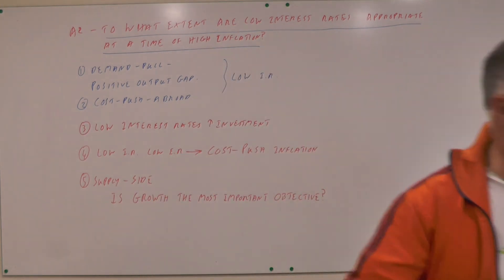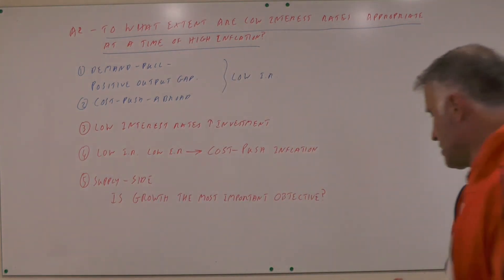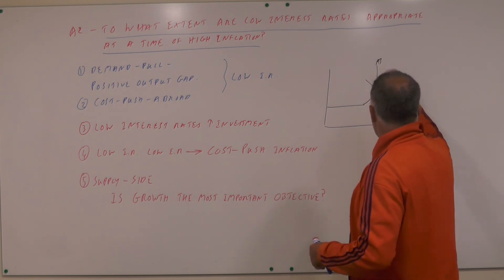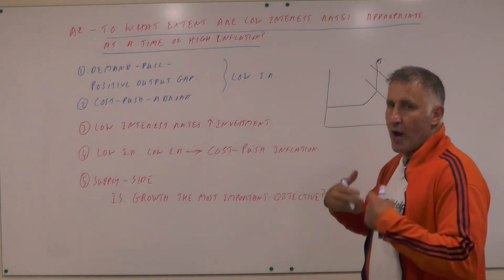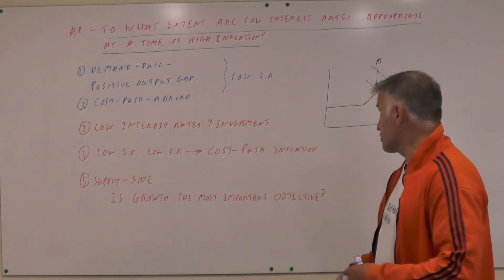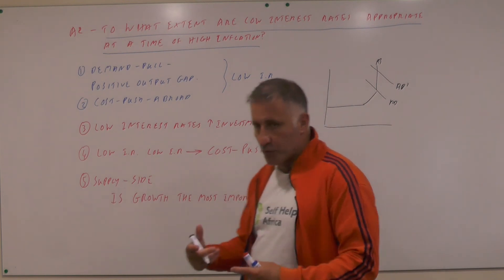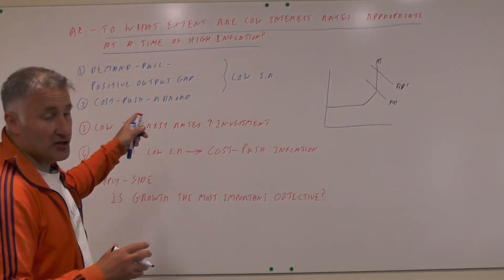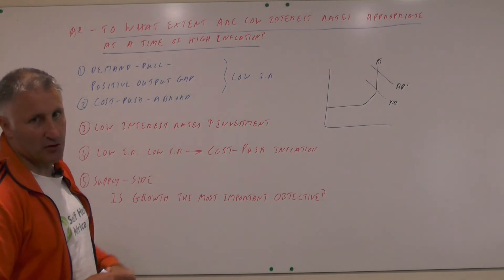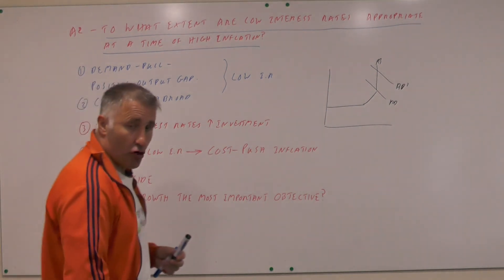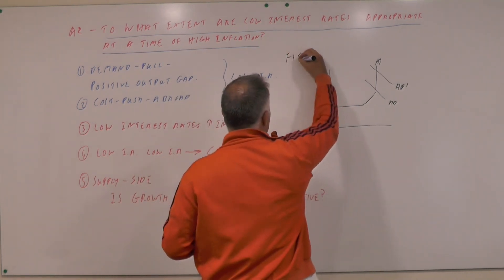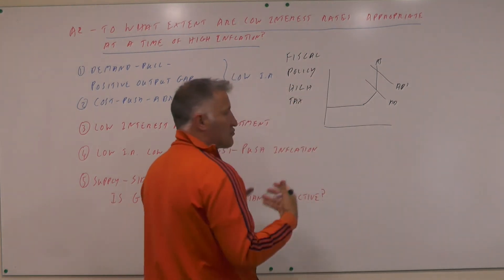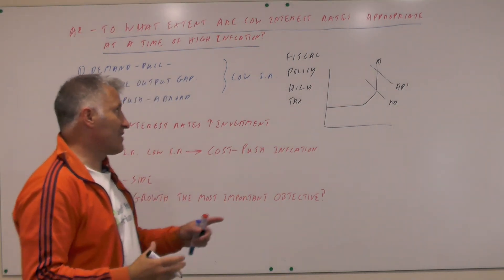If we have demand pull inflation — a positive output gap — then you should be thinking about high interest rates. On the diagram with the AS curve here and demand pull inflation pushing price levels far too high, high interest rates will cause consumption to fall, investment to fall because borrowing is more expensive, and house prices may start to fall. So with demand pull inflation, it is not appropriate to have low interest rates — unless you have a very strong fiscal policy with high taxes.